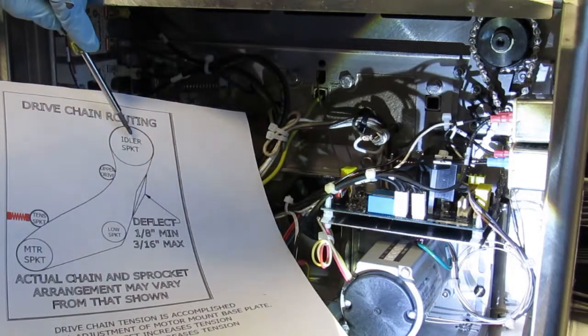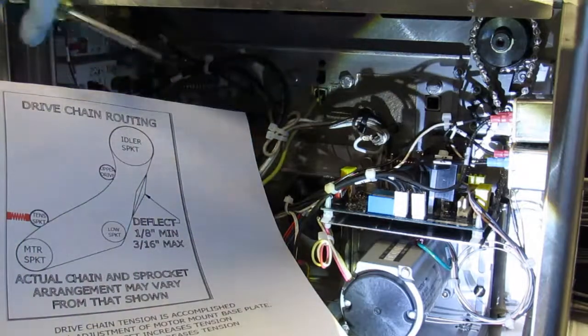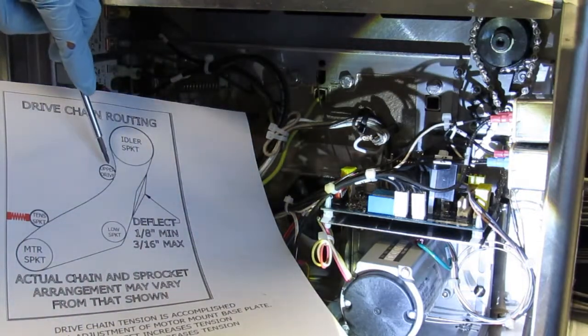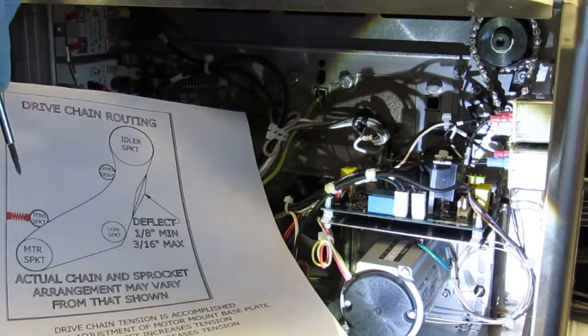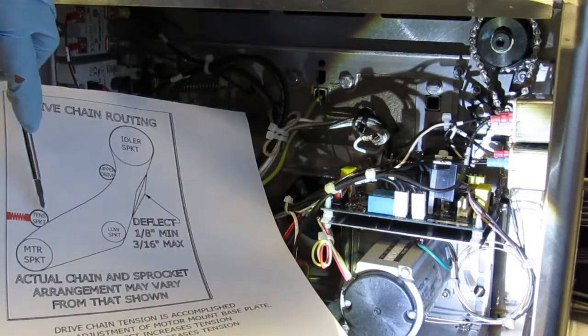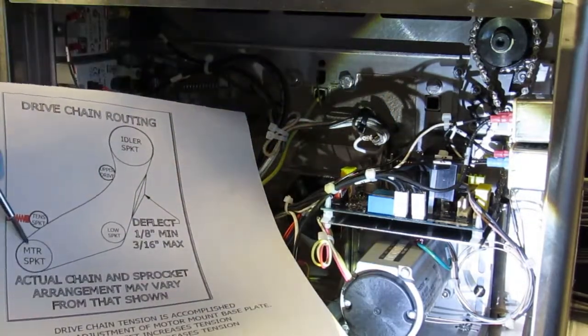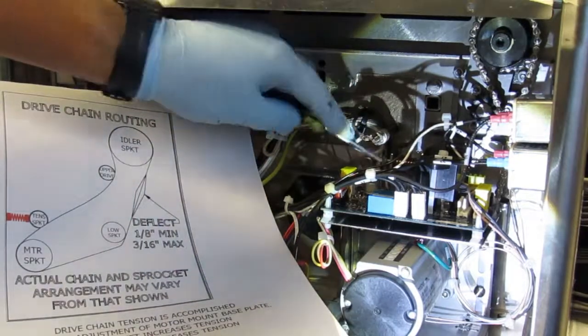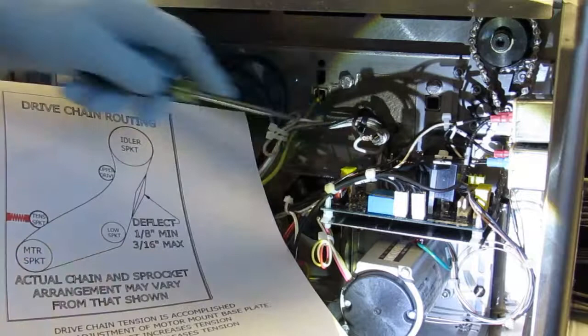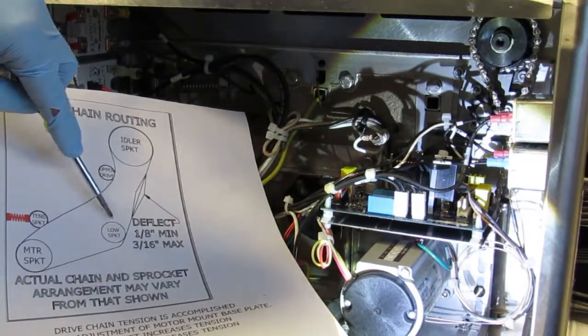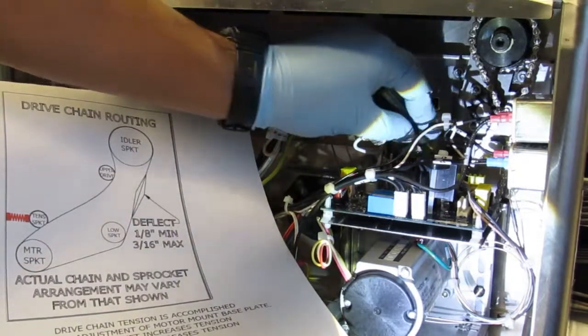The idler sprocket shown here is physically located at the very top of the toaster. The upper drive sprocket is located slightly below here. The spring-loaded tensioning sprocket shown here is located here. The motor sprocket is actually located further below, down at the bottom behind here. And the lower drive sprocket shown here is located at the very bottom towards my right.